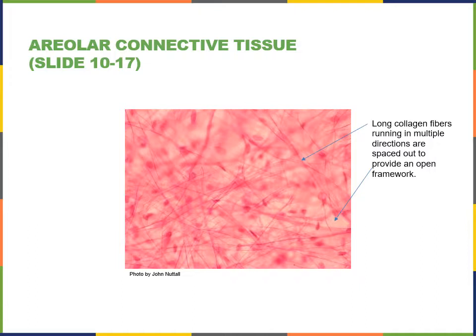Areolar connective tissue is a very loose connective tissue proper, where there is lots of space between the collagen fibers and the fibers run in multiple directions. It is often found supporting epithelia — for example, in serous membranes there is areolar connective tissue underneath the simple squamous epithelium, and in mucous membranes there is areolar connective tissue underneath the epithelium.